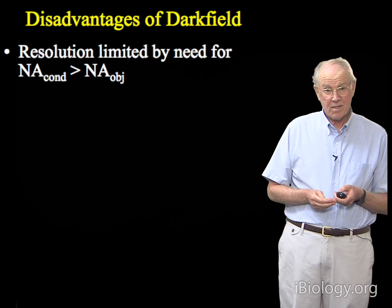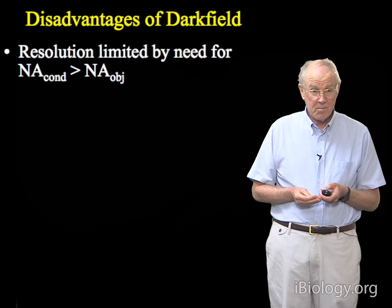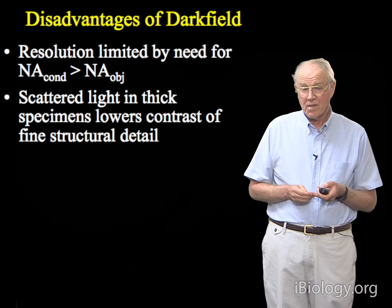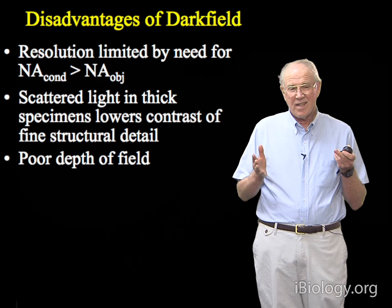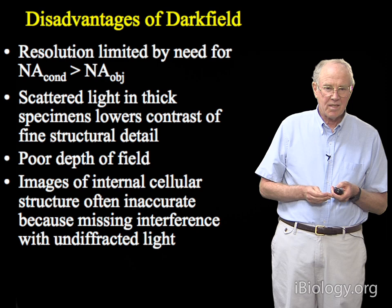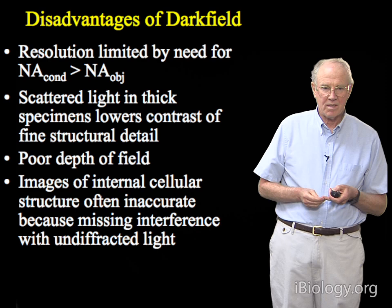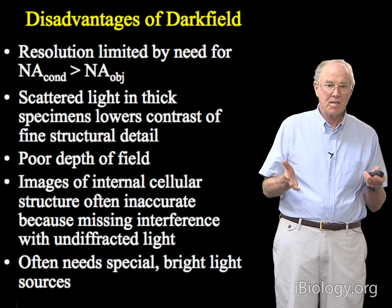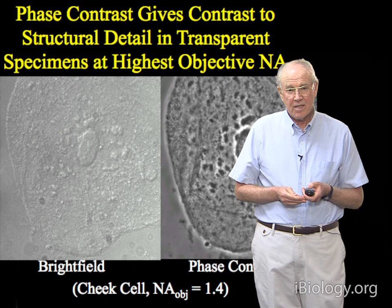Dark field has a lot of disadvantages though. Because the NA of the condenser is less than the NA of the objective, you get a limit in the actual resolution you can achieve. There's also a lot of scattered light in dark field imaging for any thickness in specimens, which obscures fine structural detail. It has poor depth of field because scattered light is carried up the optical axis of the microscope, and images of internal cellular structures are often inaccurate and confusing because you're missing the fidelity that you get by having interference with the undiffracted light. You often need very bright light sources to make a good image in dark field.